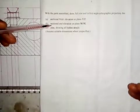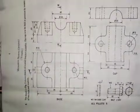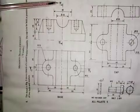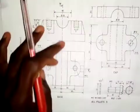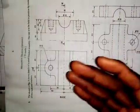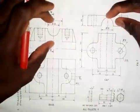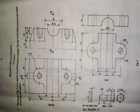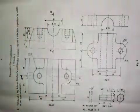We have to draw a sectional end elevation on plane MM. Let's look at where the cutting plane is on the given diagrams. This is cutting plane MM, so this part is cut. With the arrow pointing in this direction, that means this part is removed. We are looking at the object in this direction and it has been cut off, similar to how we placed the front elevation of the cap on the base.